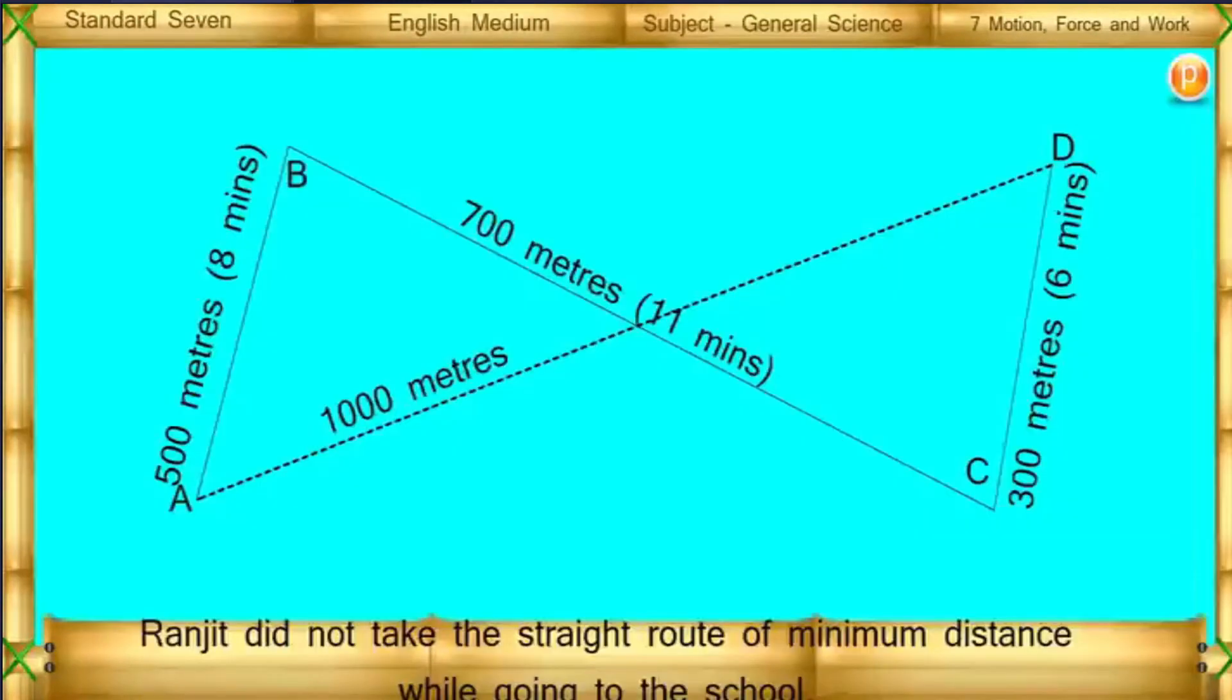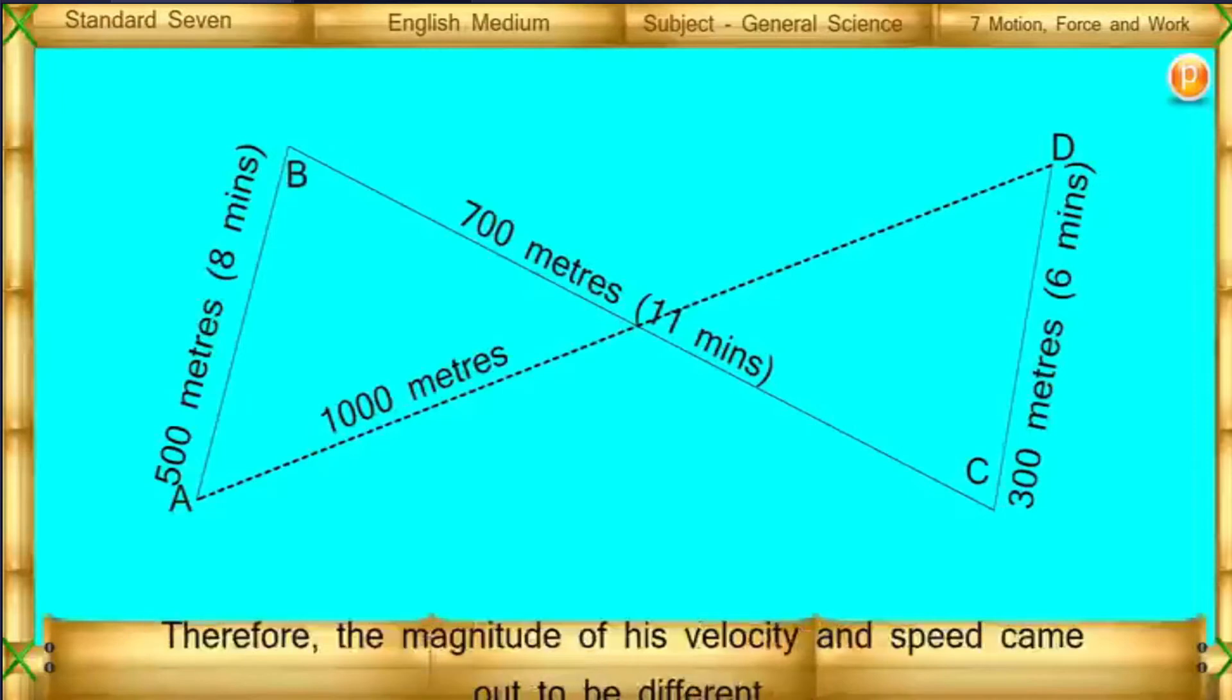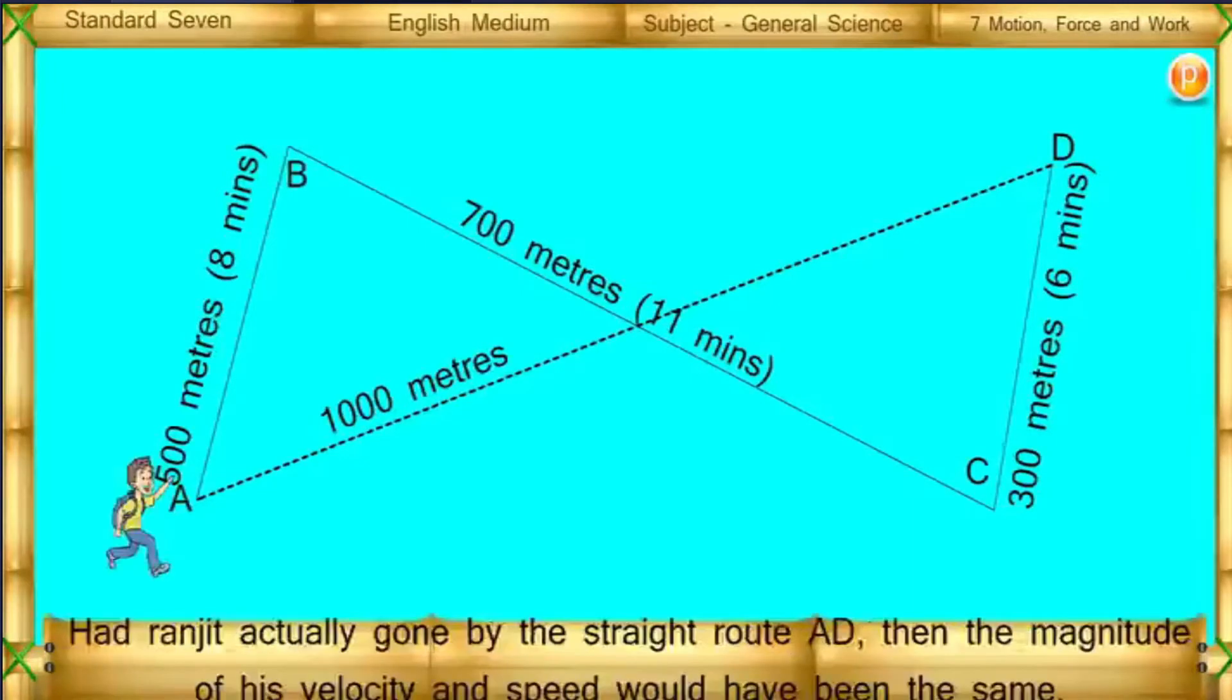Ranjit did not take a straight route of minimum distance while going to school. Therefore, the magnitude of his velocity and speed came out to be different. Had Ranjit actually gone by the straight route AD, then the magnitude of his velocity and speed would have been the same.